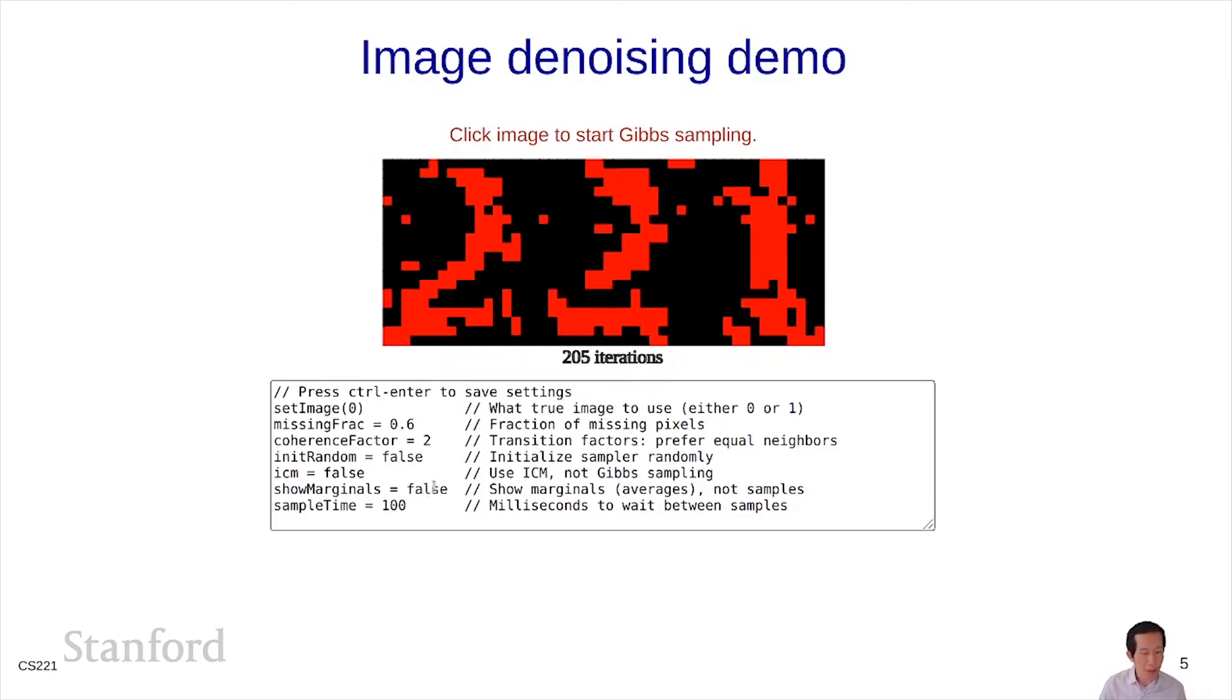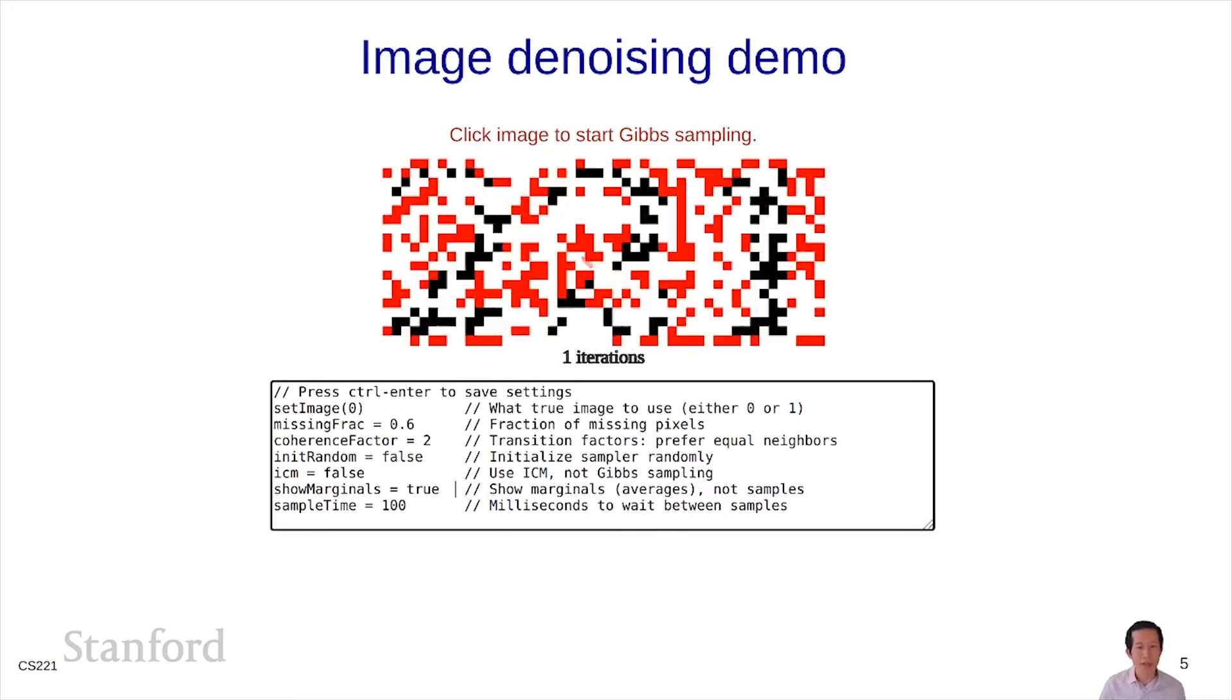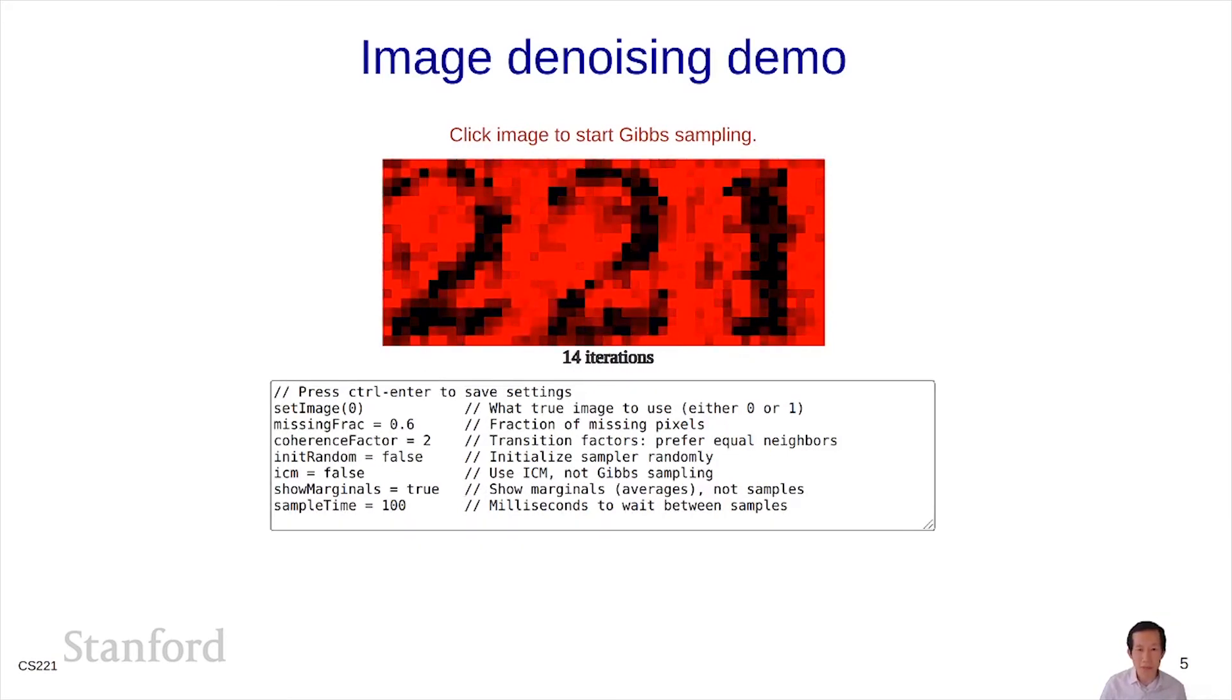One thing you can do is set show marginals equals true. What this does is that instead of visualizing the assignment at a particular iteration, for each of these pixels here, I'm actually visualizing the marginal probability estimate. This is in general going to be a number between 0 and 1, which is represented as a shade between black and red here. This, in some sense, is the kind of best guess at what the reconstruction is.